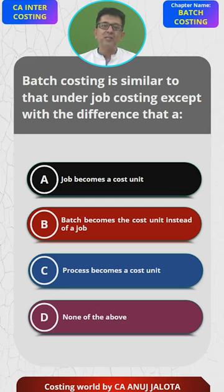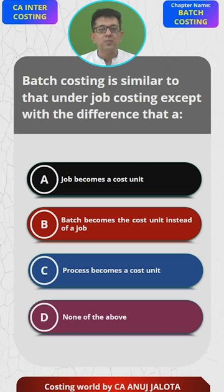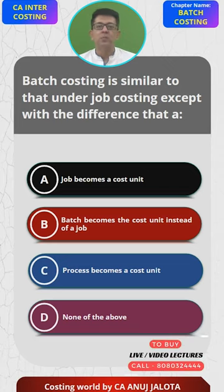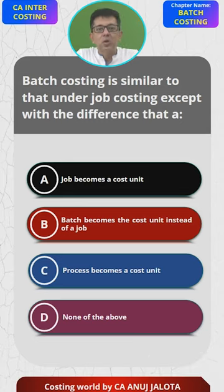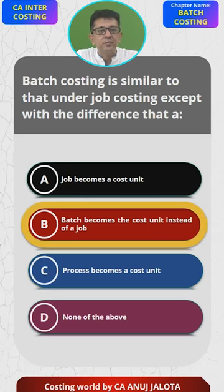Option C cannot be the answer because process costing applies where goods pass through various stages before becoming the final product. So out of A, B, and C — since C cannot be the answer — the correct answer is B. That's the correct answer.